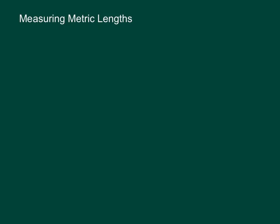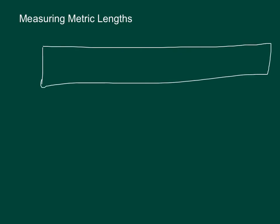Measuring metric lengths. If you have a ruler and it's a metric ruler, you'll see that it's measured in centimeters. It will be labeled centimeters, and there will be some lines on it and some numbers. You'll have a 1, a 2, a 3, a 4, a 5, a 6, and it'll keep going.